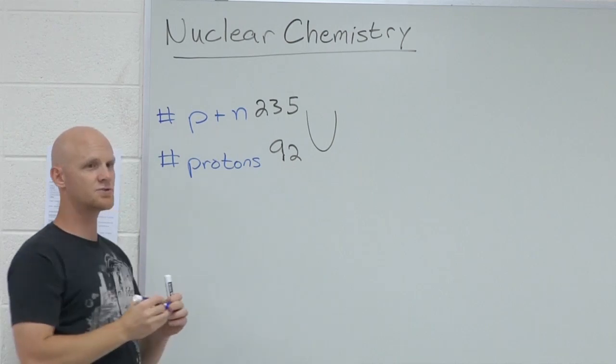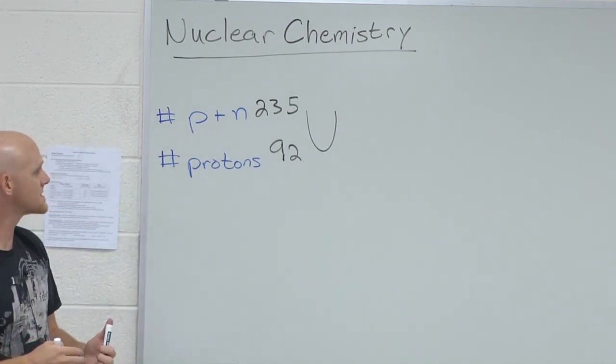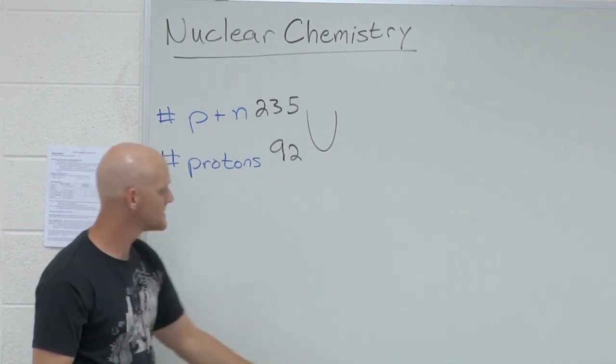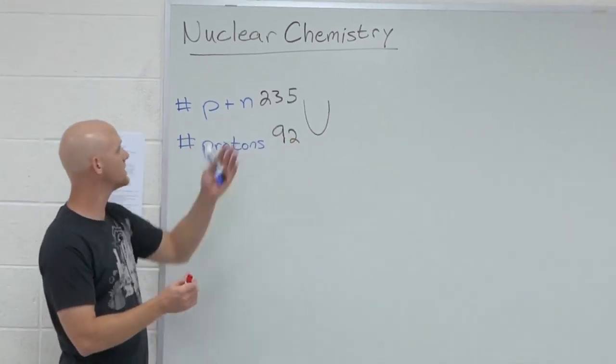What does the mass number ultimately tell you? Yeah, protons and neutrons combined. Protons and neutrons combined. So in this case, how many protons and how many neutrons are in uranium-235?